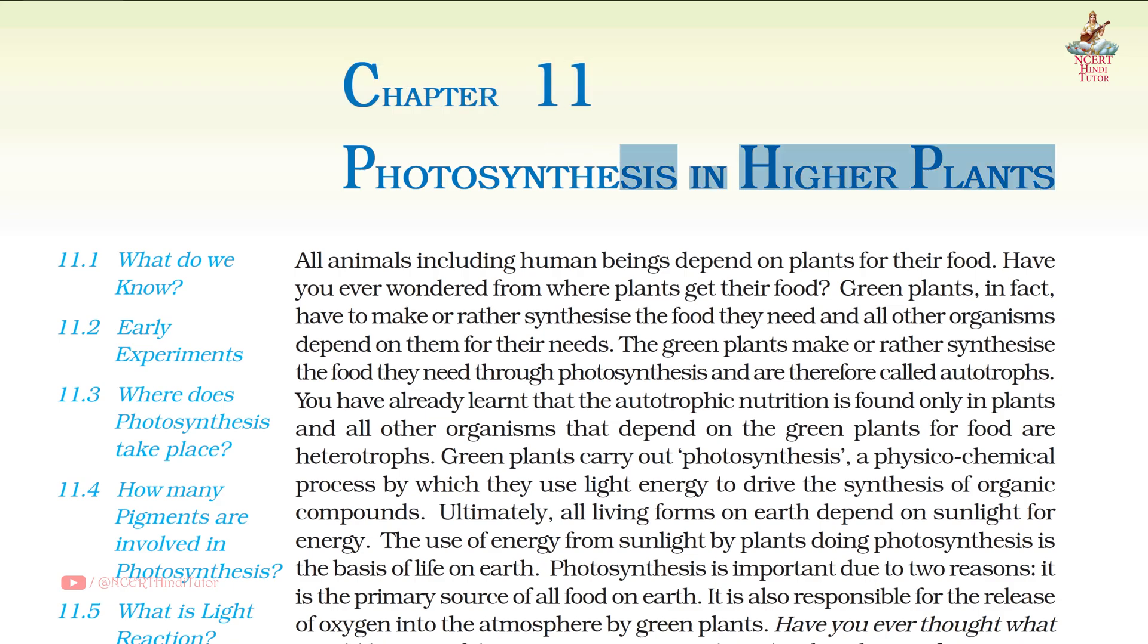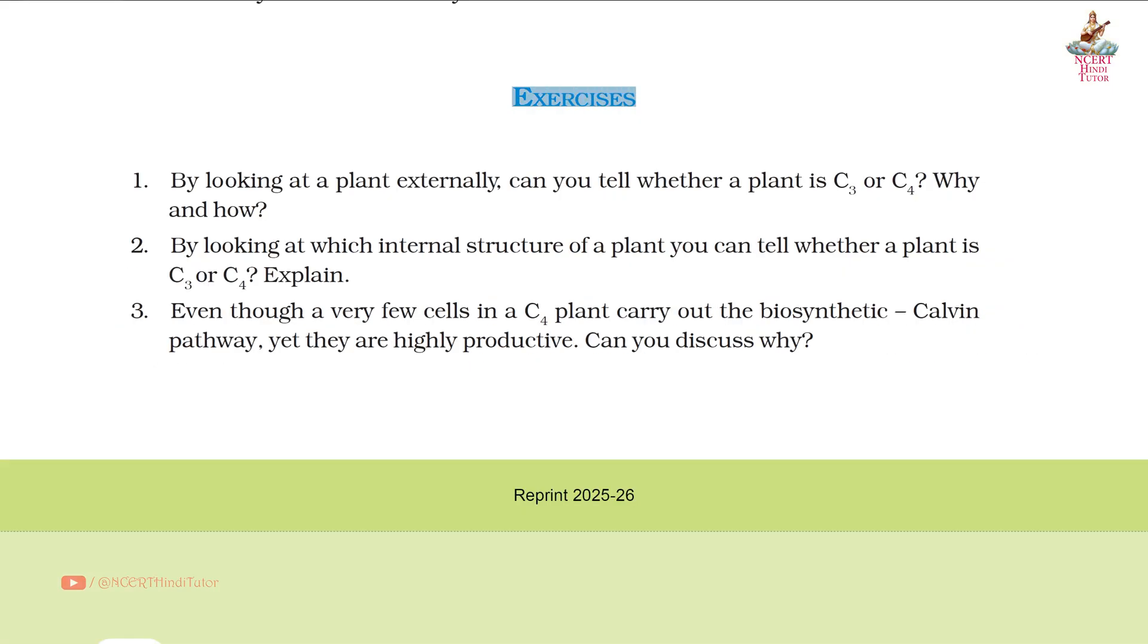Chapter 11: Photosynthesis in Higher Plants, Question Answers from Class 11 Biology. Question 1: By looking at a plant externally, can you tell whether a plant is C3 or C4? Why and how?